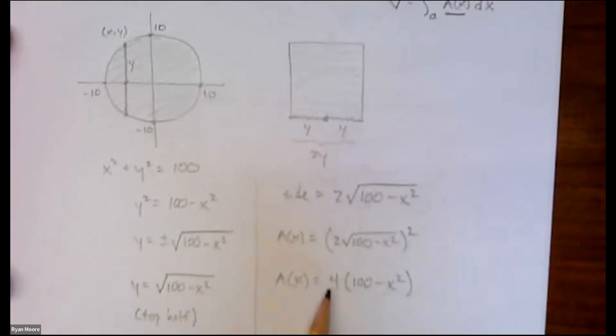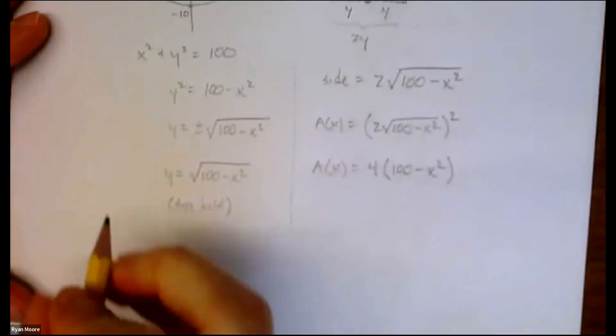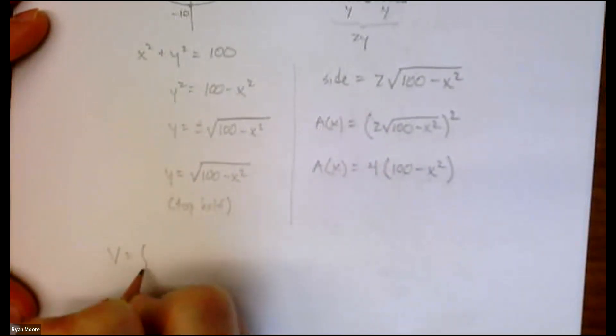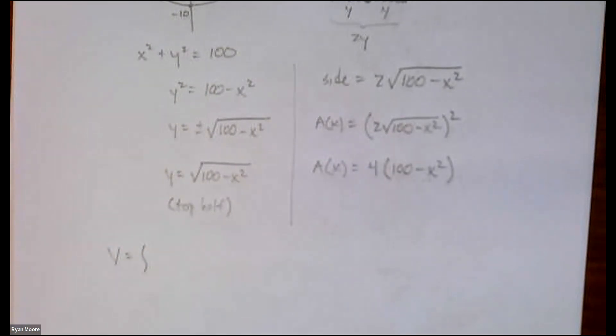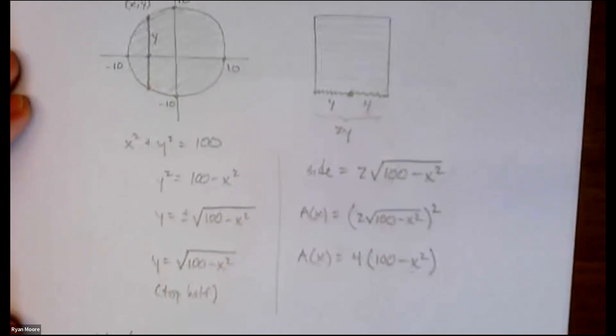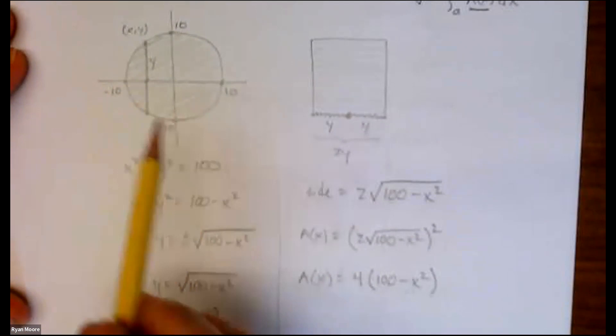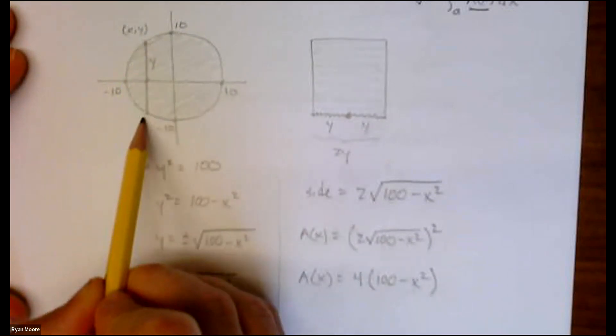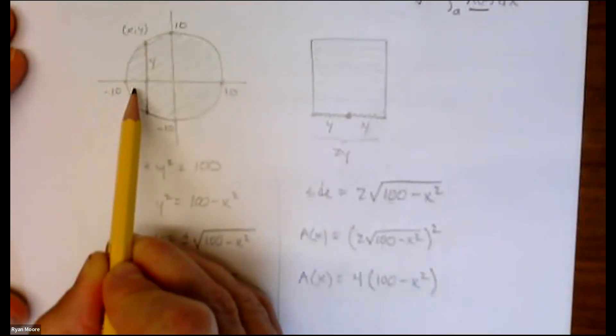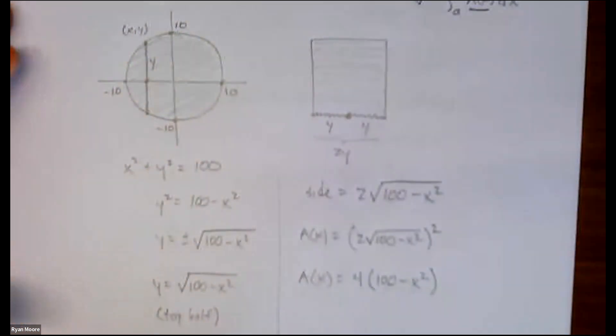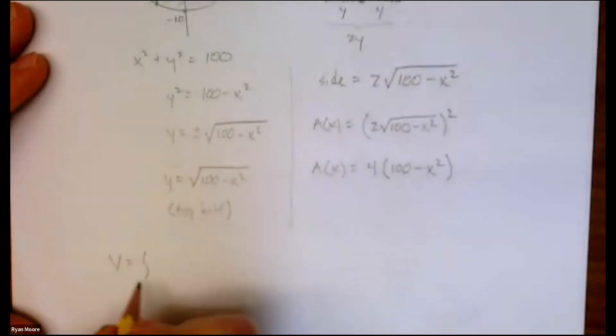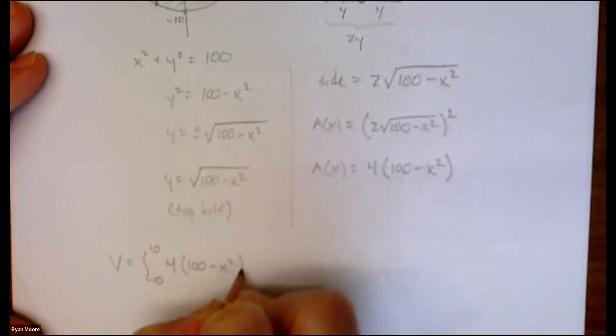Once you have A(x), well then it's just a matter of setting it up. Hey, what are the limits of integration? Negative 10 to 10. We're thinking of this line here as sliding across, adding up all of those different volumes, so we can say negative 10 to 10, 4(100-x²) dx.